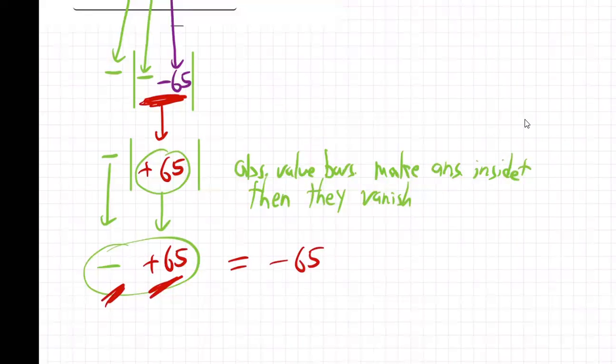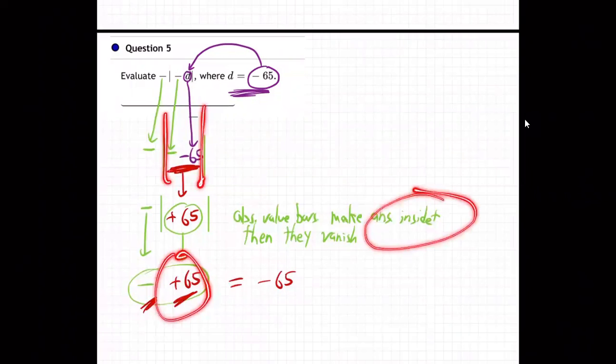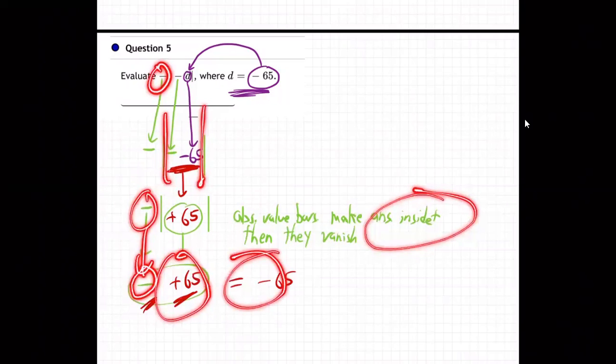Really, we could have known that from the beginning. If you think about it, look back up here for a minute. See this stuff that's inside? It doesn't matter what's inside of an absolute value, because absolute value bars are going to make the inside become positive. The inside, just the inside. Whatever's outside is just going to stay there. And there was a minus outside all along. So we knew for sure that minus was going to be there in the end, because the absolute value is not going to change him. And so the answer had to be negative 65.